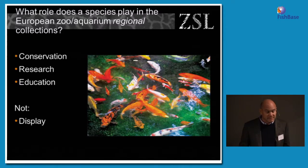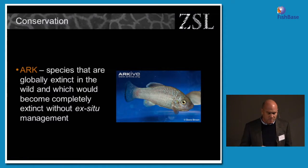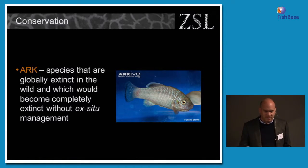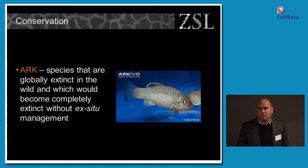The first category is conservation, which has several subcategories. The first one is Arc — those are species that are globally extinct in the wild and which would become completely extinct if it weren't for ex situ management. An example is the pupfish — there are many species of pupfish and quite a few other freshwater fish that would be completely extinct right now if it weren't for hobbyists and zoos and aquariums maintaining them long-term in captivity.